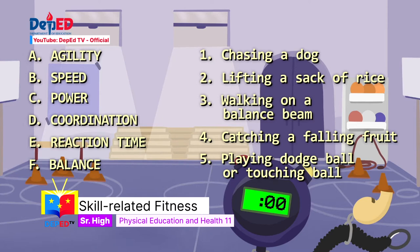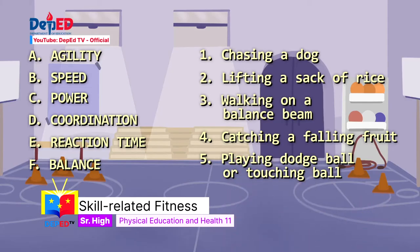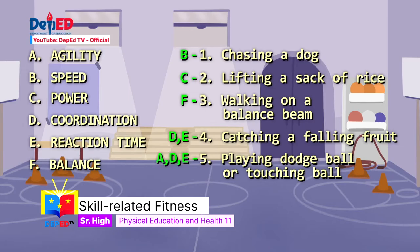And now for the answers. Number one: B, speed. Number two: C, power. Number three: F, balance. We have two answers for number four: D, coordination, and E, reaction time. And we have three answers for number five: A, agility; D, coordination; and E, reaction time.